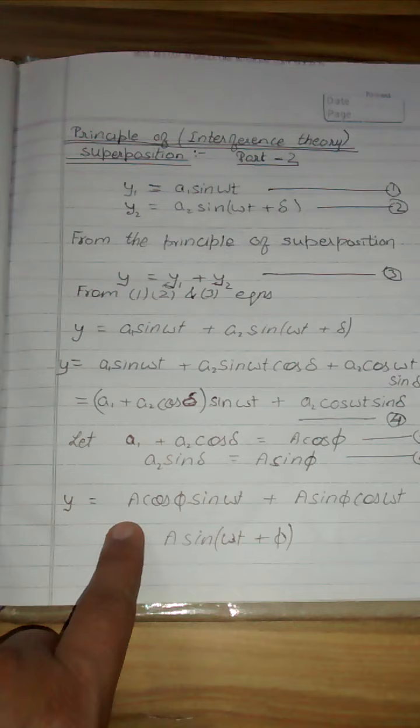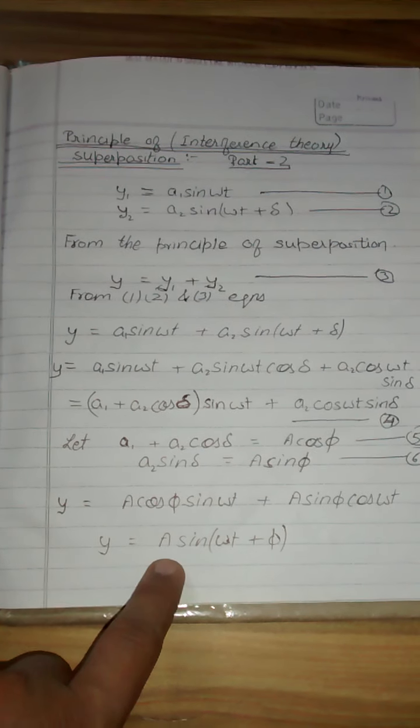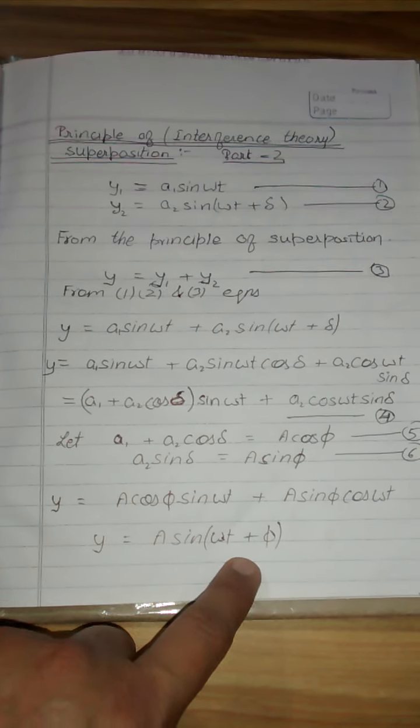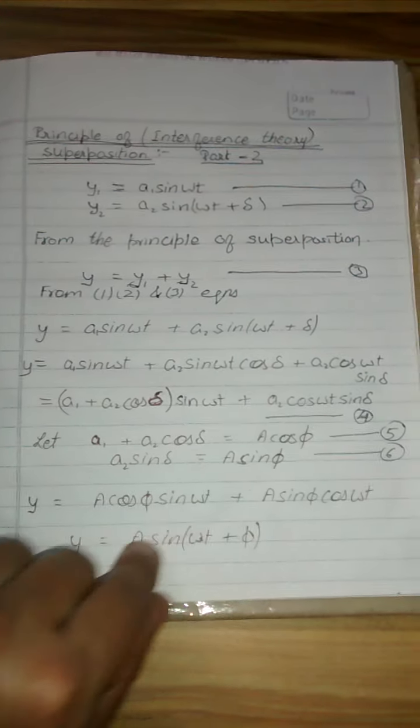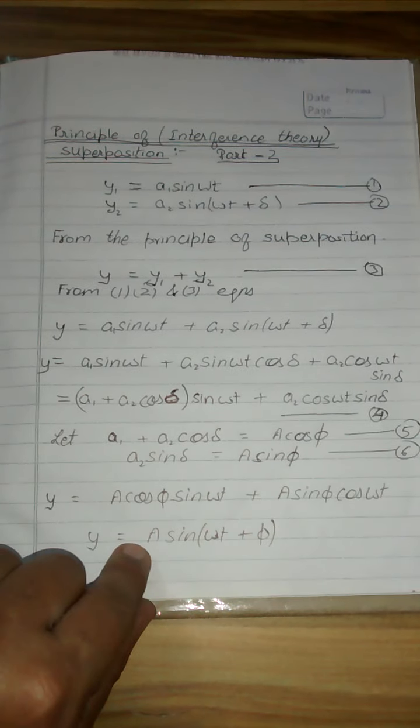This will be equal to this formula which is from the trigonometric formula, that is y equals A sine omega t plus phi. Now we obtain the value of phi and what is the value of A.